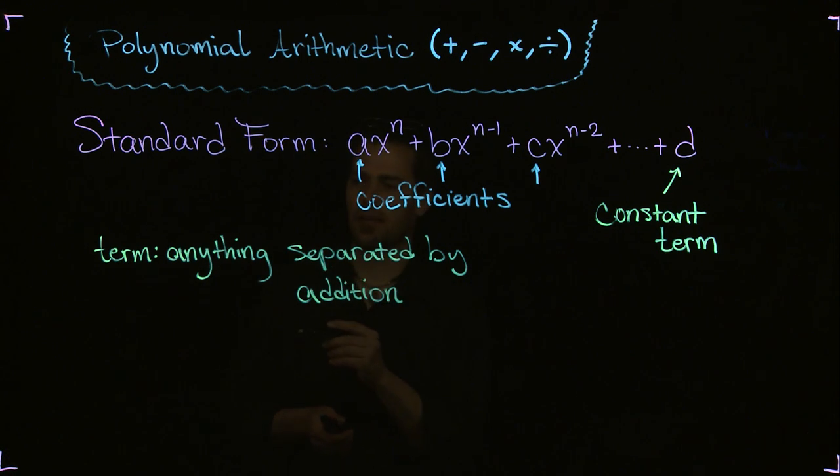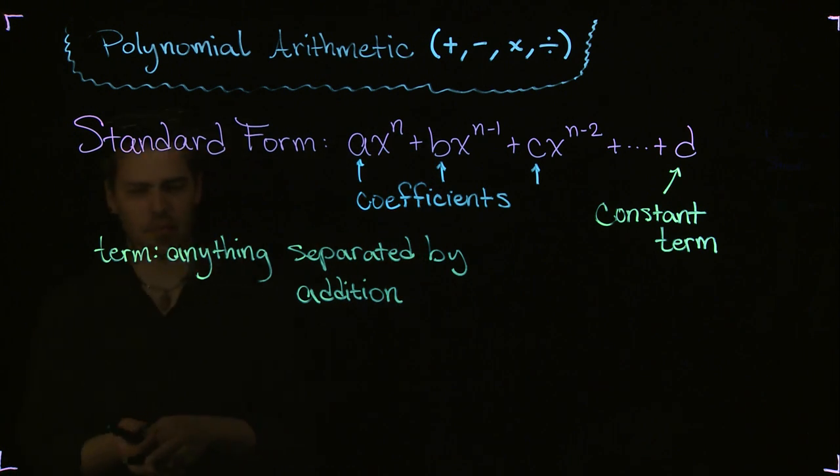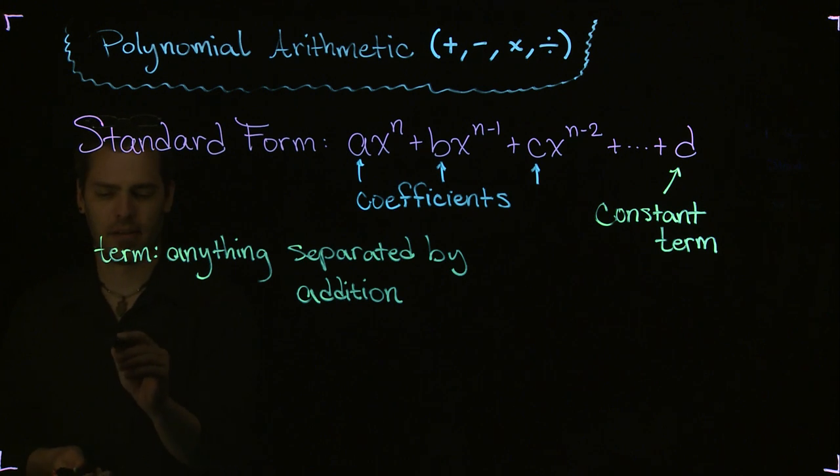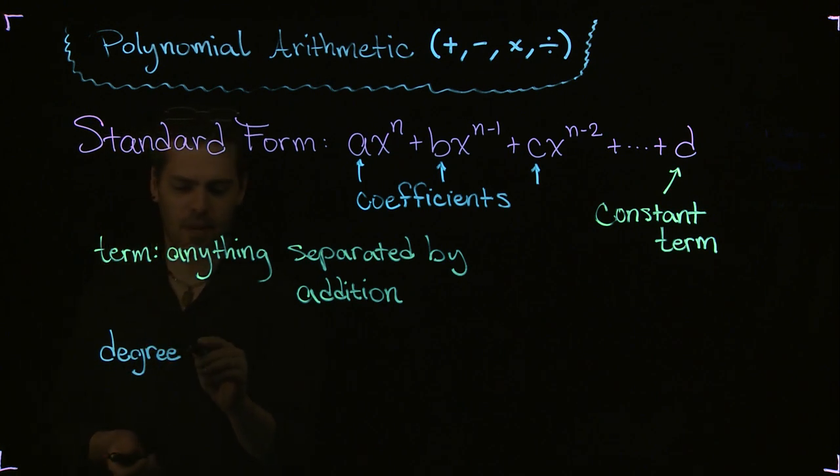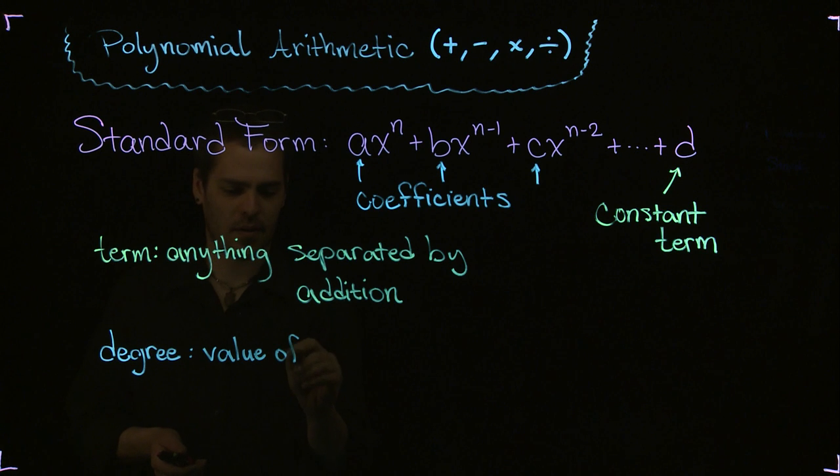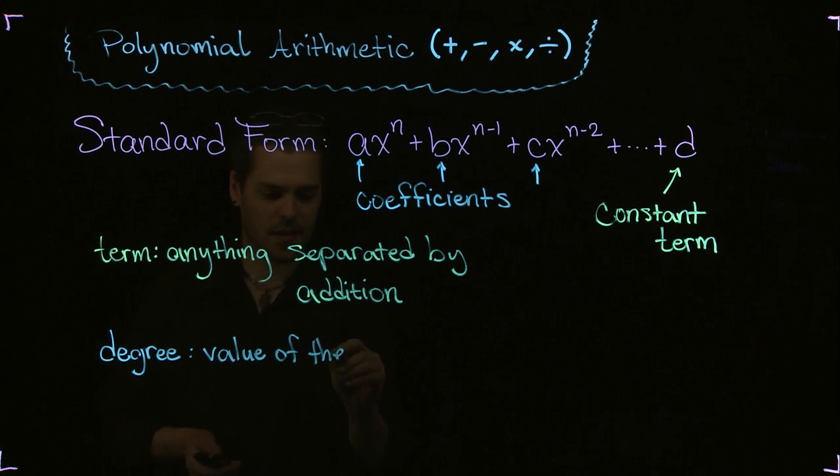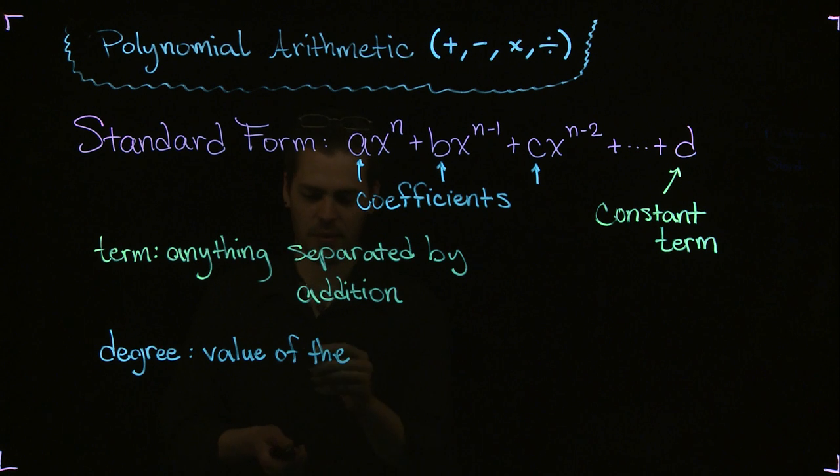There's one other thing I'd like to talk about before I show an example, and that's the degree of the polynomial. The degree of a polynomial is simply the value of the highest power—the value of the highest power of x, or of the variable.